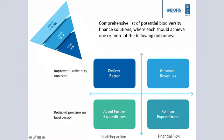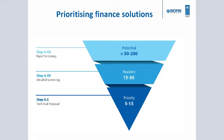So you've looked at all your background documents, spoken to experts and stakeholders, and developed a comprehensive list of potential finance solutions — now you need to prioritize them. These solutions should be achieving at least one or more of the following outcomes: delivering better, generating revenues, realigning expenditures, or avoiding future expenditures. You then go through two levels of screening: a rapid screening process and a more detailed screening. We typically start with around 50 to 200 finance solutions. Rapid screening should bring you down to 15 to 50, and detailed screening to 5 to 15 solutions that go into your biodiversity finance plan.